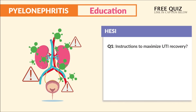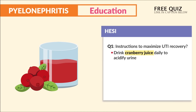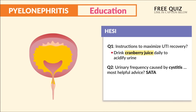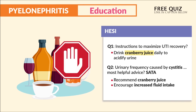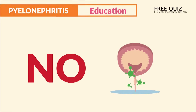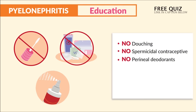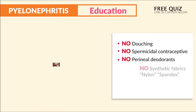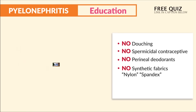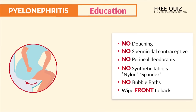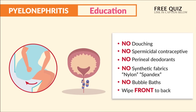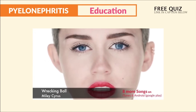Hesse had two questions: one on instructions to maximize UTI recovery — the answer is to drink cranberry juice daily to acidify the urine. Another on the most helpful advice for urinary frequency from cystitis: recommend cranberry juice, encourage increased fluid intake, and discourage coffee, tea, cola, and alcohol. Also, big no-nos: no douching, no spermicidal contraceptives, no perineal deodorants, no synthetic fabrics like nylon or spandex — always recommend cotton underwear — and no bubble baths. Showers are okay. Most importantly: always wipe front to back, never back to front.